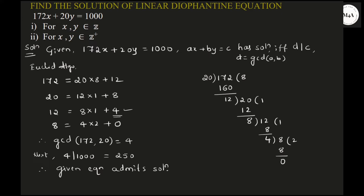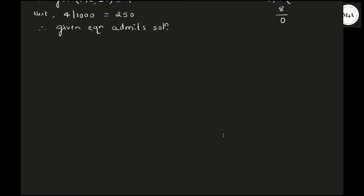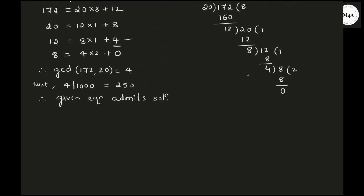Now we proceed. We need to find the solution by expressing a and b as a linear combination in terms of the GCD. Our d is 4. We go back in reverse order. 4 can be written as 12 minus 1 times 8. Then 8 can be written as 20 minus 12 times 1, so substituting: 4 equals 12 minus 1 times (20 minus 12 times 1).